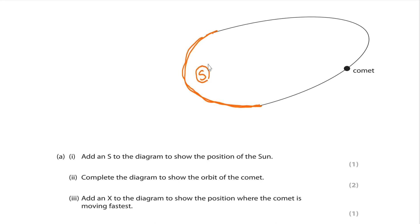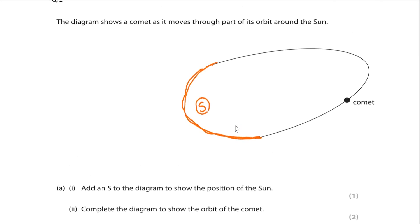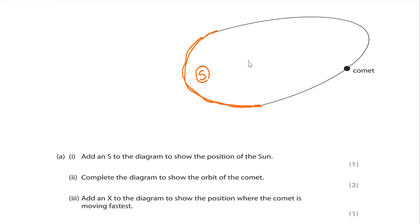Complete the diagram to show the orbit of the comet. Remember, comet revolves around the Sun in a very elongated and elliptical orbit. Sometimes the comet comes very close to the Sun and sometimes it goes far away from the Sun.